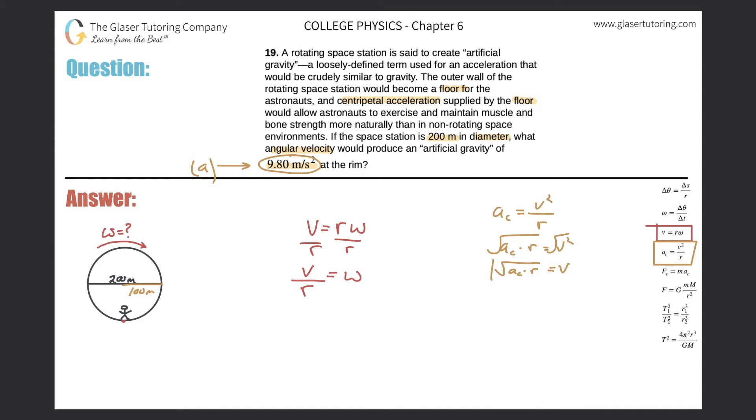So now what we're going to look to do is take this and plug it in for v. And when we do that, let's see what happens now. Do we know all of these variables? Do we know the radius? Yeah, it's 100. So that's fine. We know both of those r's. Do I know the centripetal acceleration? Well, they want me to find the angular velocity when the centripetal acceleration is 9.8. So voila, we got what we need.